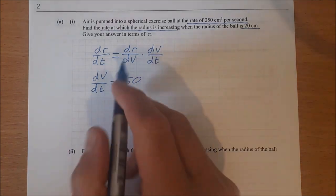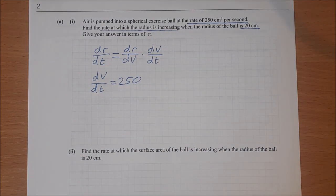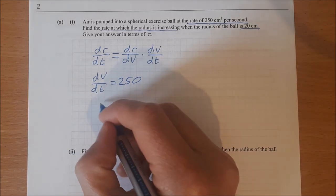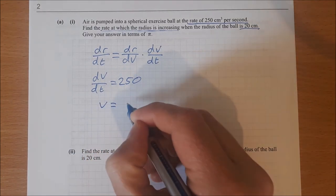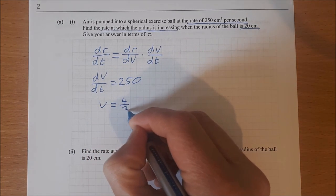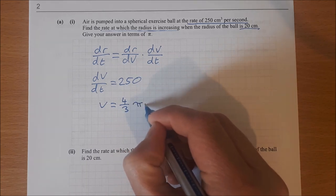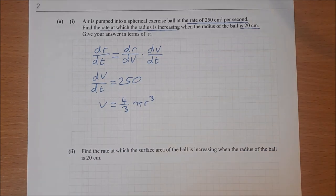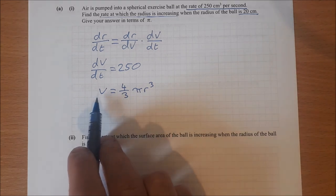But what about dr/dv? How do I find dr/dv? I need to have something that I can differentiate that has to do with volume. Well, we're looking at volume of a sphere, so the volume of a sphere is 4/3 pi r cubed.